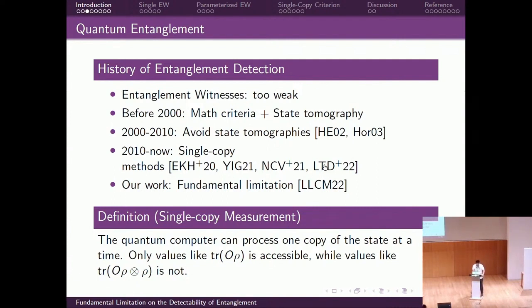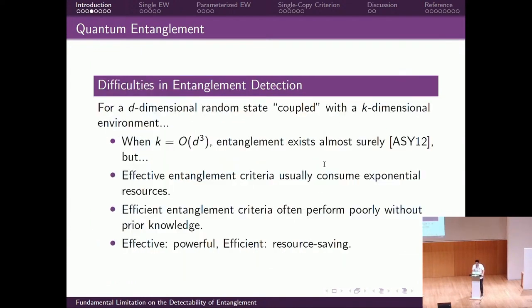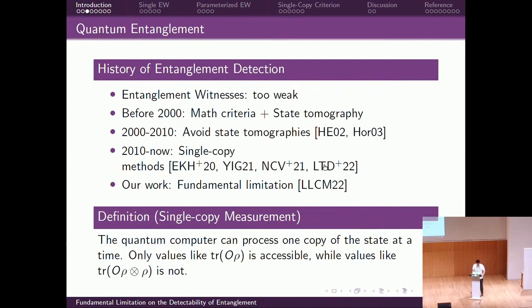With the development of NISQ devices, we are interested in performing entanglement detection experiments on those devices. However, NISQ devices have limited capability — they can process one copy of the state at a time, and only values like Tr(O·rho) are accessible, but values like Tr(O·rho⊗rho) or Tr(rho²) cannot be computed. As a result, we focus on entanglement criteria that only require single-copy measurements and try to minimize the number of measurements needed. However, none of these approaches is fully satisfactory — they either cannot detect much entanglement or they cost too much.